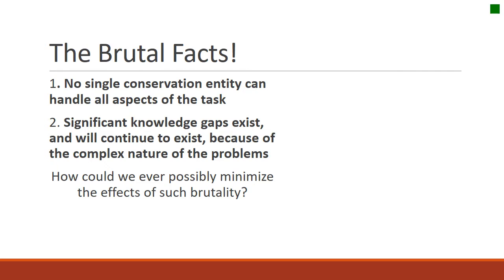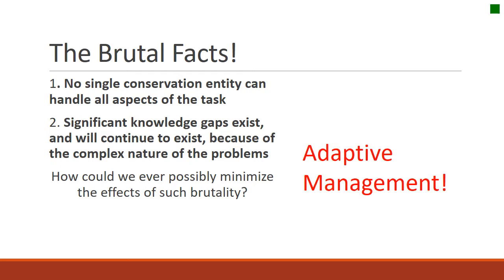Now that we've differentiated simple and complex issues, we move on to why adaptive management is necessary to improving rangelands. Chad and Tony's paper lists two 'brutal facts' emphasizing why adaptive management is essential to management success. The first brutal fact is that no single conservation entity can really handle all aspects of a task. The second is that there are significant knowledge gaps which exist and will continue to exist because of the complex nature of problems. How do we minimize the effects of such brutal facts? Through adaptive management.